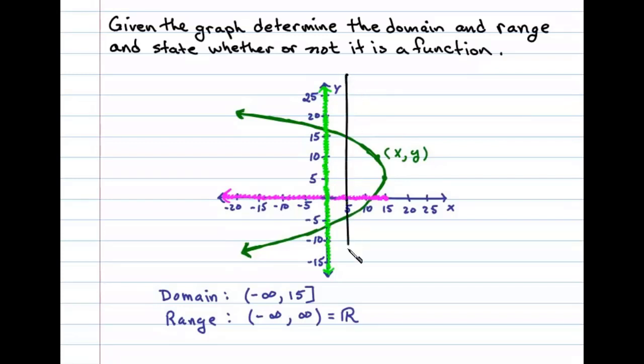Here we can see that we can find a vertical line that crosses the graph more than once. Therefore, it's not a function. In other words, the x value here, say 5, has two possible y values.